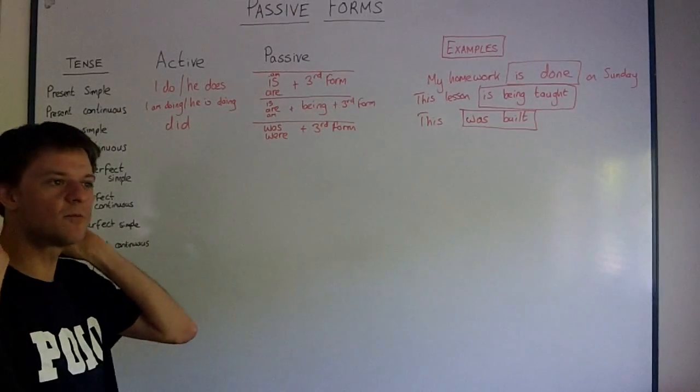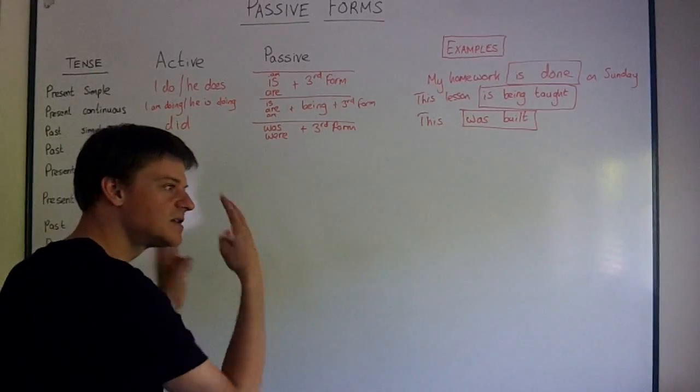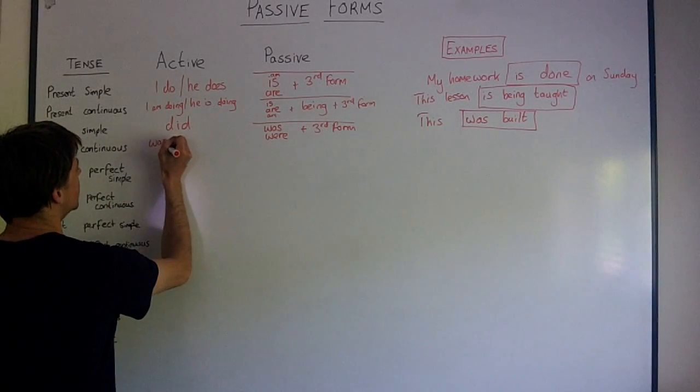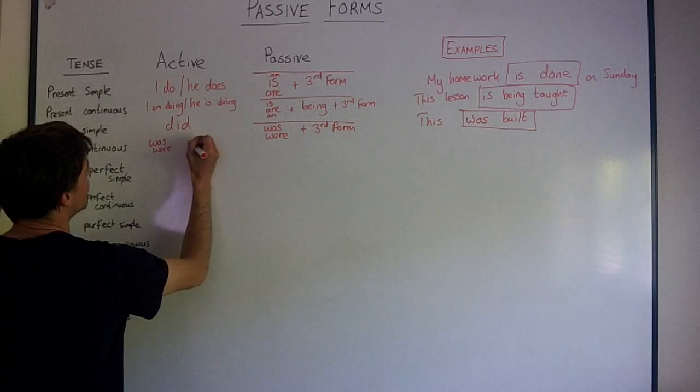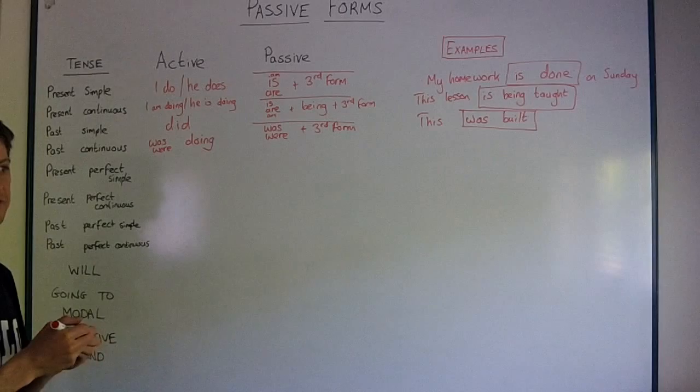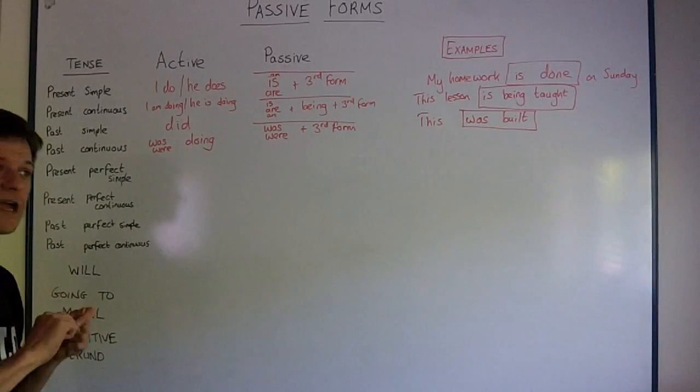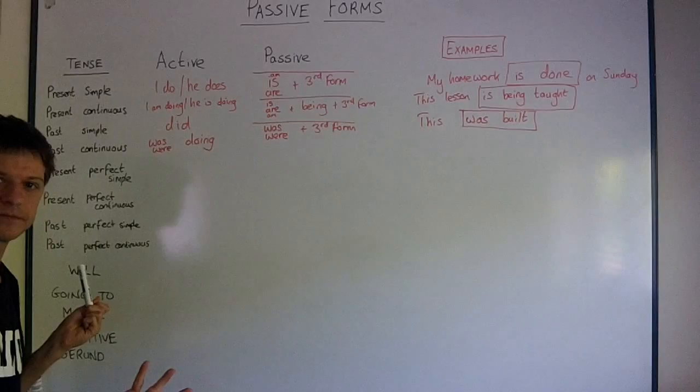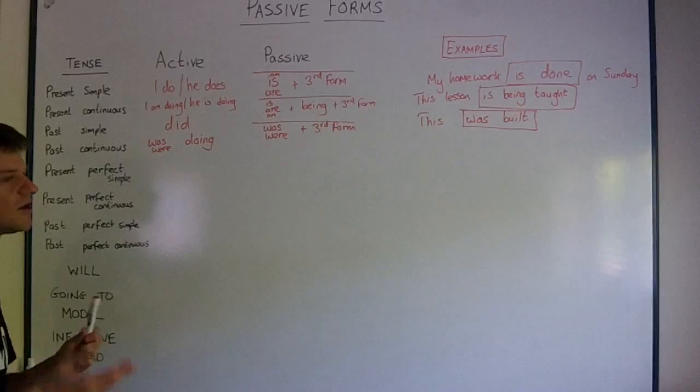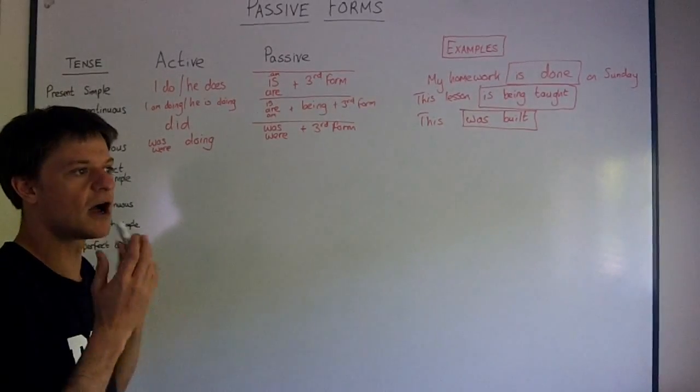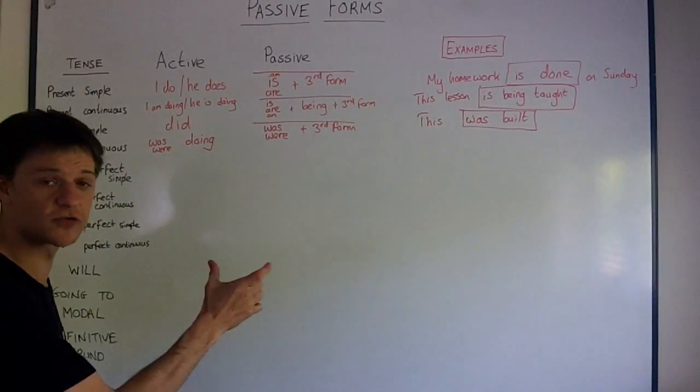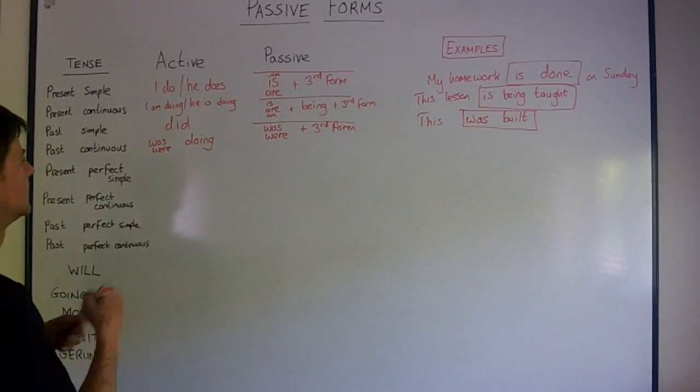Past continuous was or were doing is used for unfinished past moments. For example, it was raining when I arrived at work. The rain wasn't finished. It was in the middle of raining when I arrived at work. Or I was driving at a hundred miles per hour when I had an accident. I was driving. It wasn't finished. It was in the middle of the process.